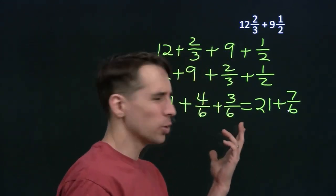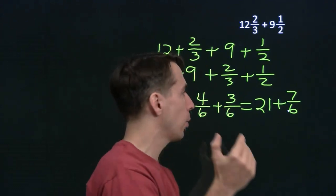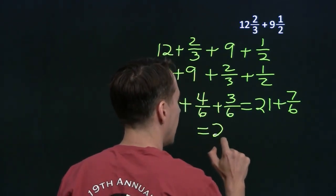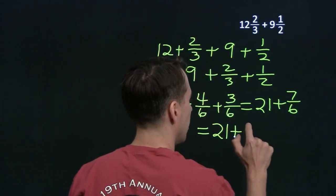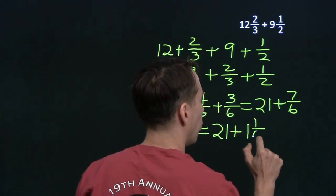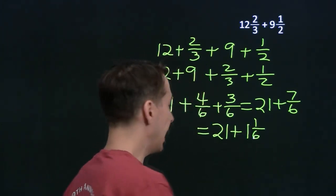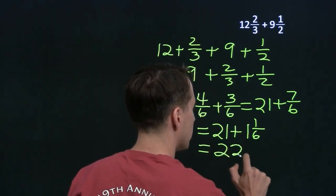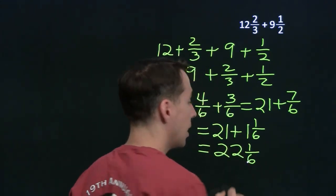Now, I can't really write that as 21 and 7 sixths. We want the fractional part to be between 0 and 1. What I can do here is I can take that 7 sixths and write it as a mixed number. 7 sixths is just 1 and a sixth. Now we see how to add these up. 21 plus 1 and a sixth, well, that's just 22 and a sixth. And we're done.